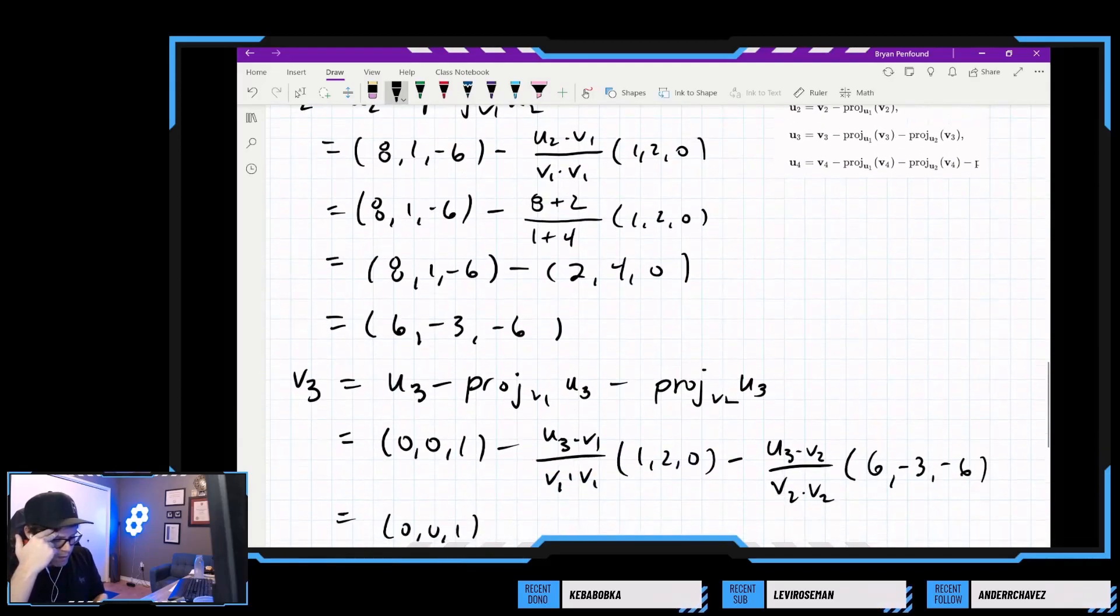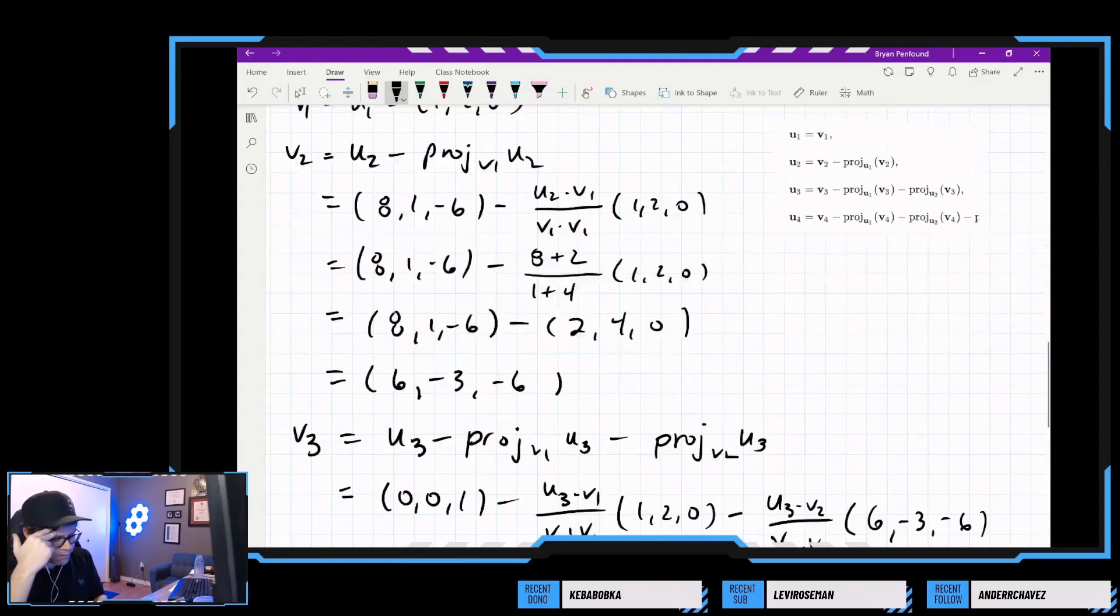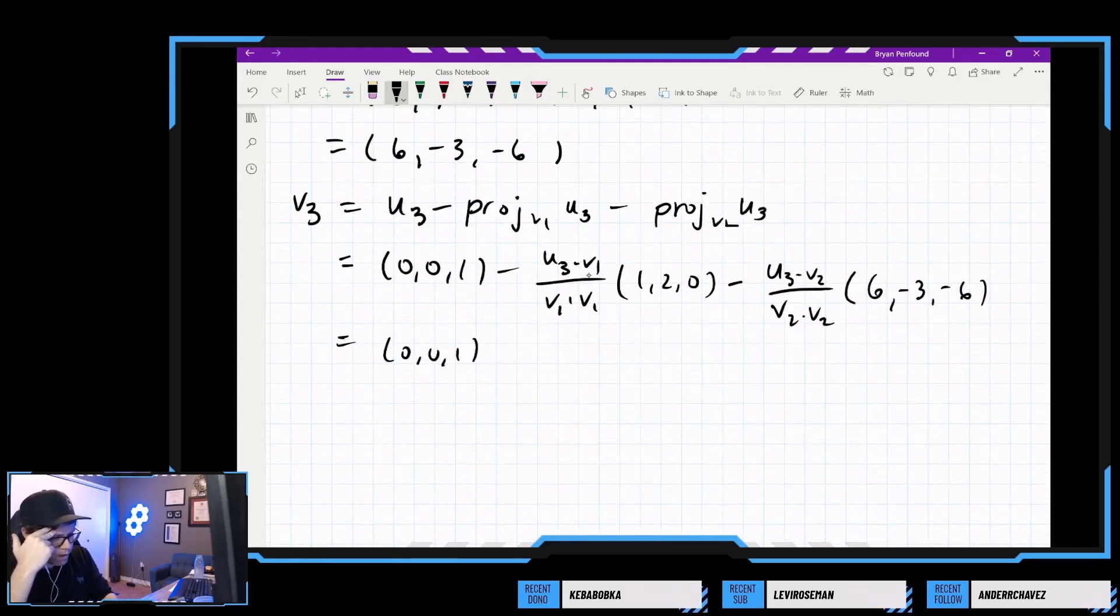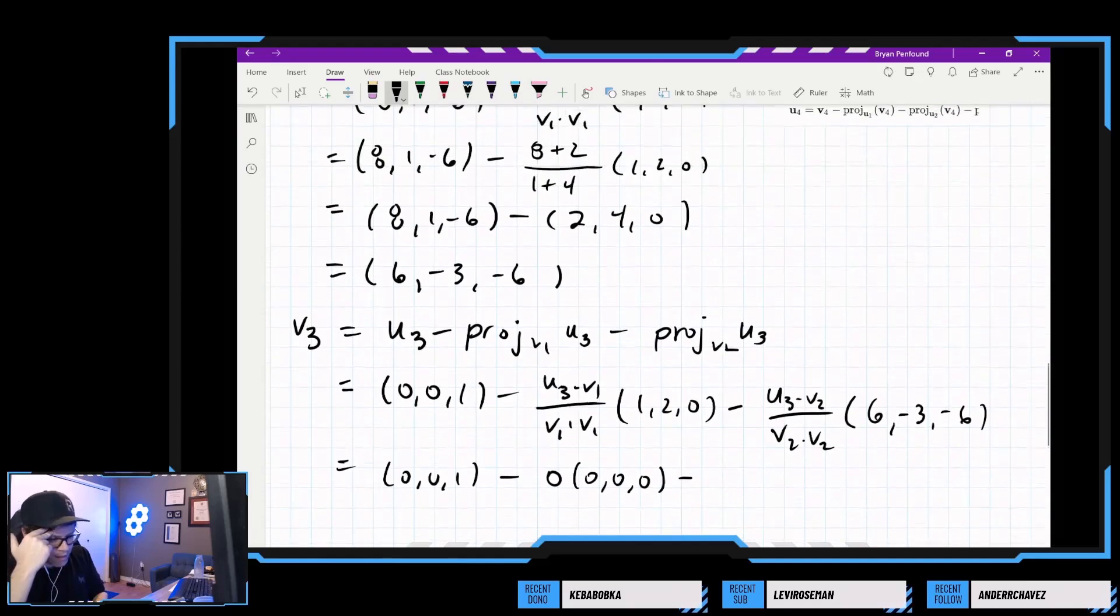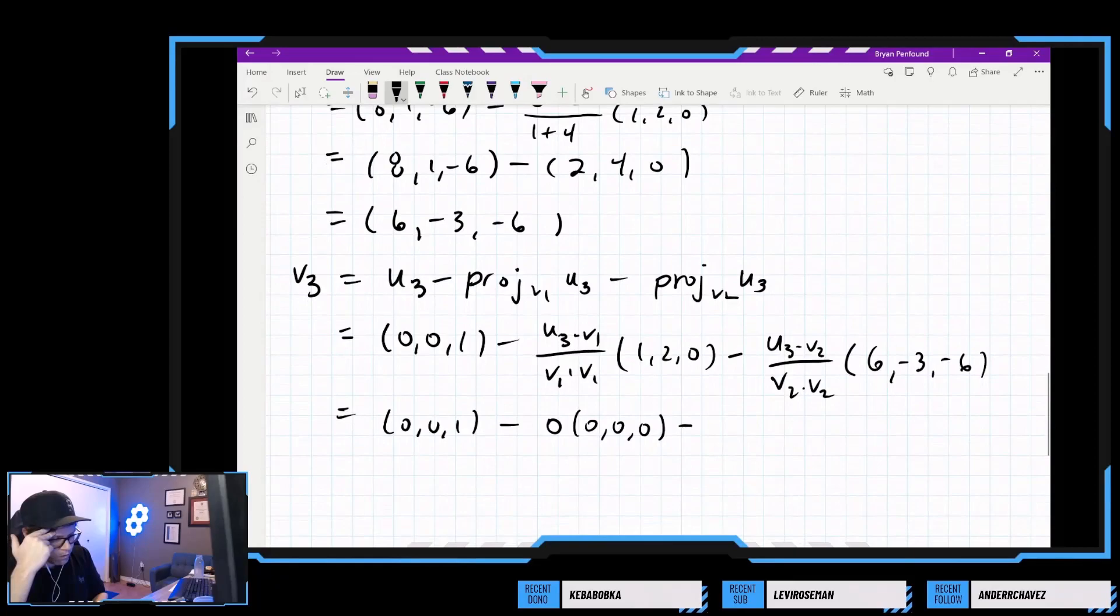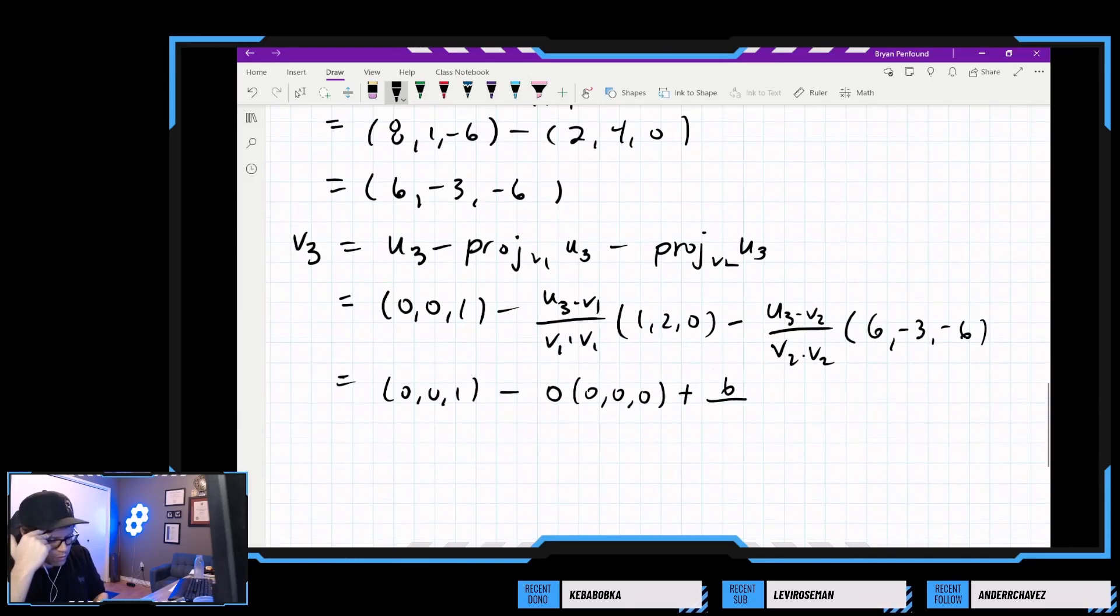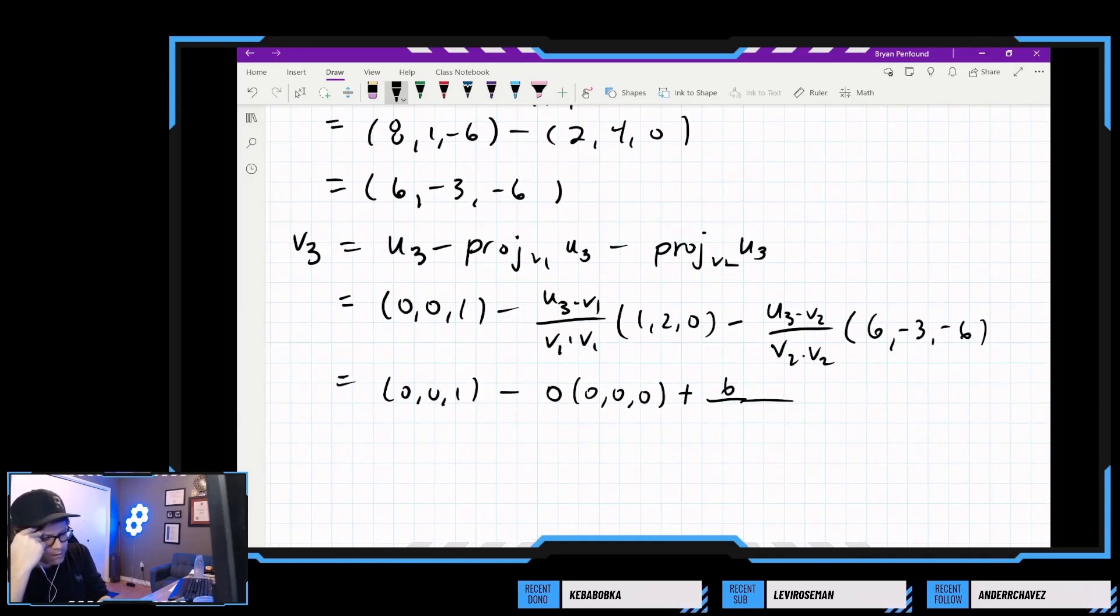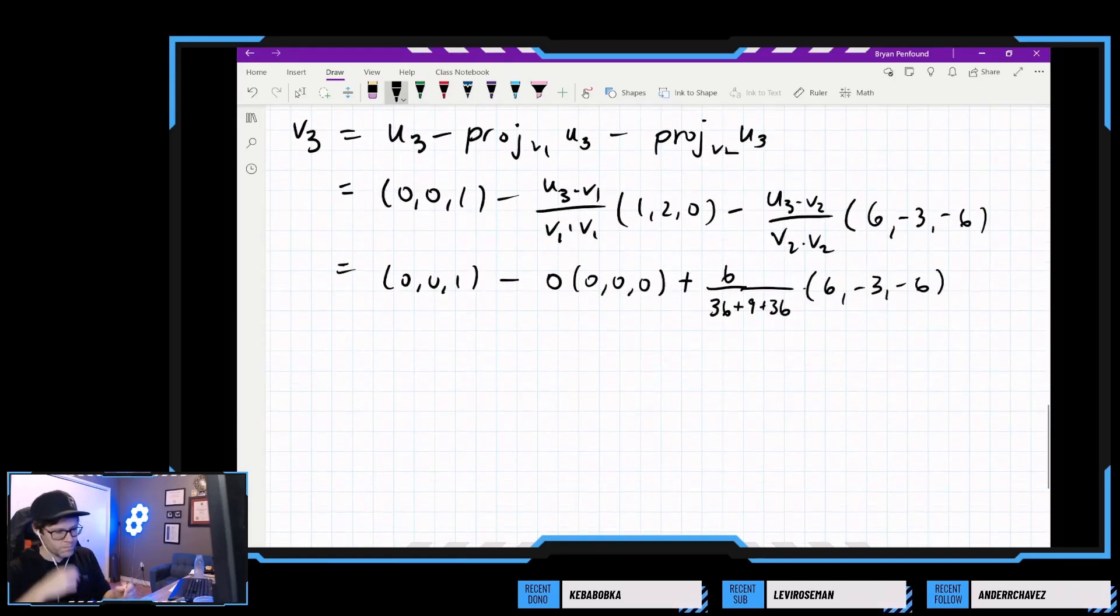Maybe not, actually. Maybe not. So certainly for v1 and u3, this is 0. But I think for u3 and v2, we will get negative 6. So it should be plus 6 and then v2. So we need 36 plus 9 plus 36. So that means we have 0, 0, 1.